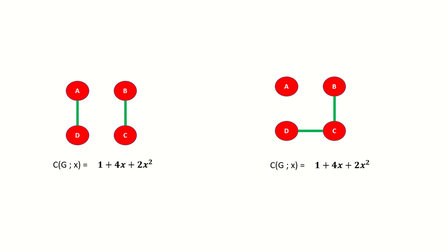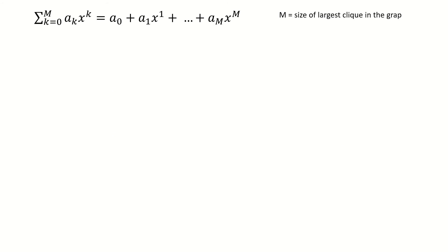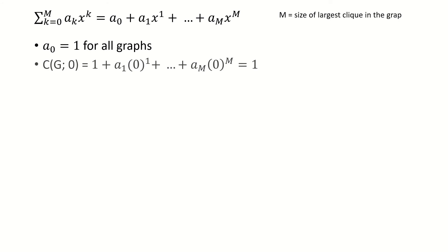Let's look at some major properties of clique polynomials. The first property is that for any clique polynomial, the constant term is always 1, as every graph has exactly one 0-clique, corresponding to the empty subgraph. This also implies that the clique polynomial of any graph evaluated at 0 is 1.